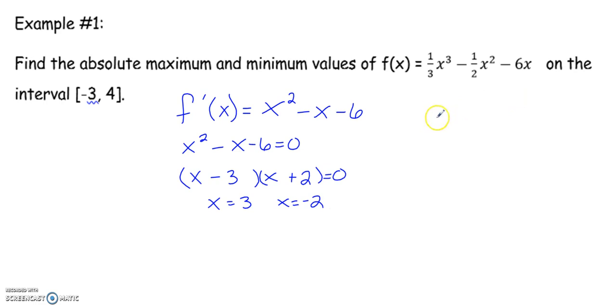Then we're going to make a table - x and y. We have to include these two endpoints, so negative 3 and 4, and then also include these critical points.